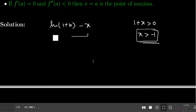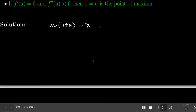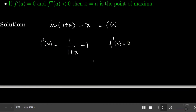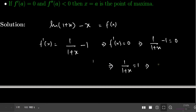To find the point of maxima or minima, differentiate the function and equate to zero. The first derivative is f'(x) = 1/(1 + x) - 1. Setting f'(x) = 0 gives 1/(1 + x) = 1, which gives x = 0. So the function has an extremum at x = 0.